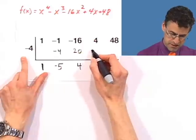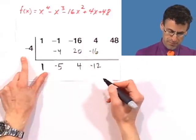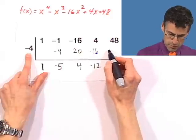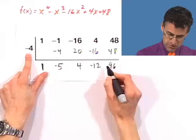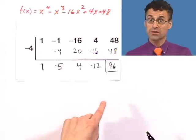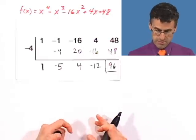And 4 times negative 4 is negative 16. And you add, you get negative 12. And then negative 4 times negative 12 is 48. And you add, and you get 96. That's the remainder, by the way. Remember, if the remainder is 0, that means that you actually hit a root. So here, we actually see that it's not 0, which means negative 4 is definitely not a root.